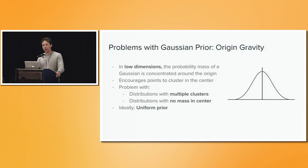However, upon close inspection, there are some issues with a Gaussian. Particularly in low dimensions, we have something called origin gravity, where because most of the probability density is concentrated around the origin, points are actually encouraged to cluster in the center. This is not necessarily an issue, but if you have a latent distribution that has multiple clusters, you get the behavior that all these points are clustered towards the center, which is not necessarily what we want. We want them to actually be separated as far from each other as possible.